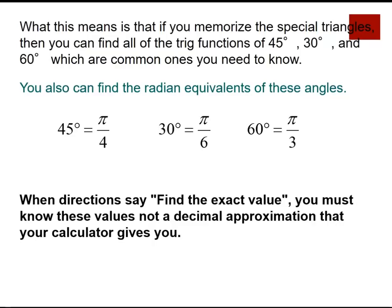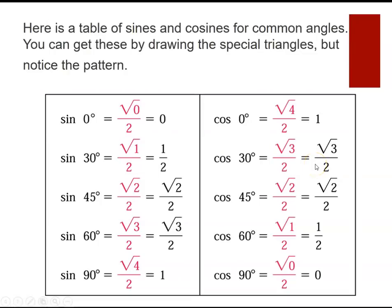Your calculator gives a decimal answer, but you need the exact value expressed in radian form. These are the important values to remember: sine 30, sine 45, sine 60, sine 90, as well as the corresponding cosine and tangent values — tangent equals opposite over adjacent.